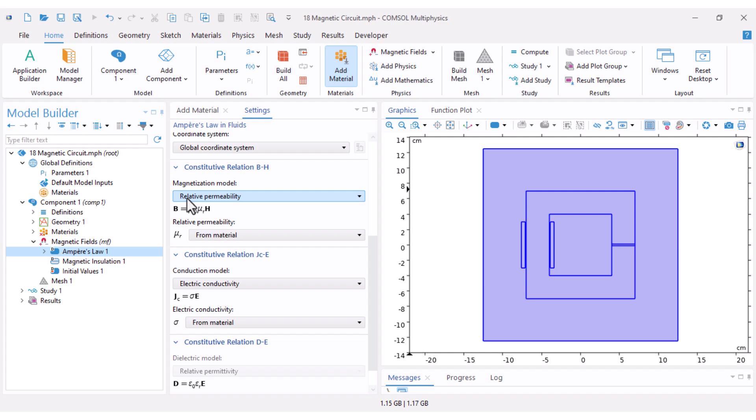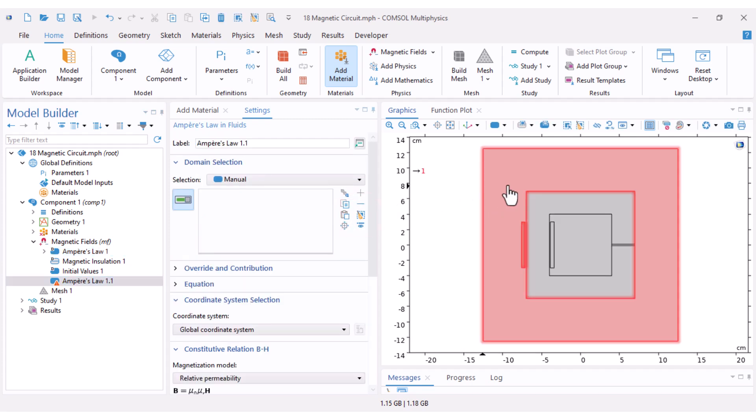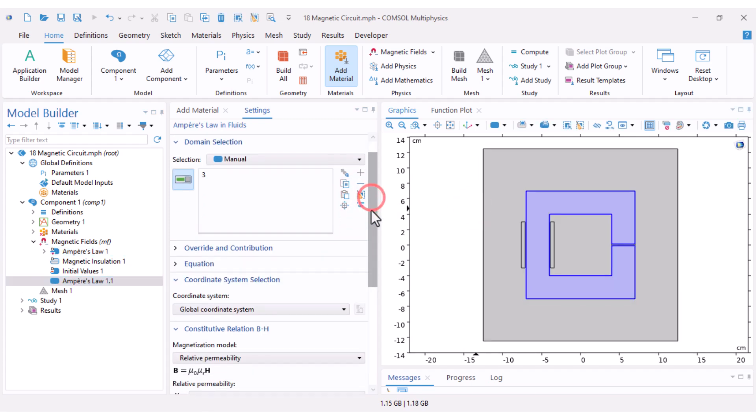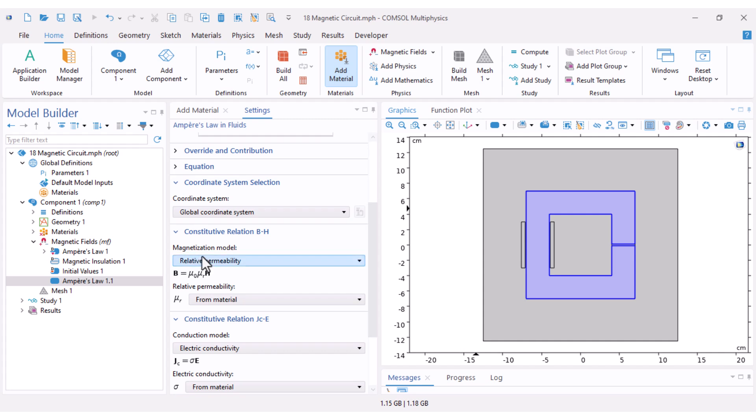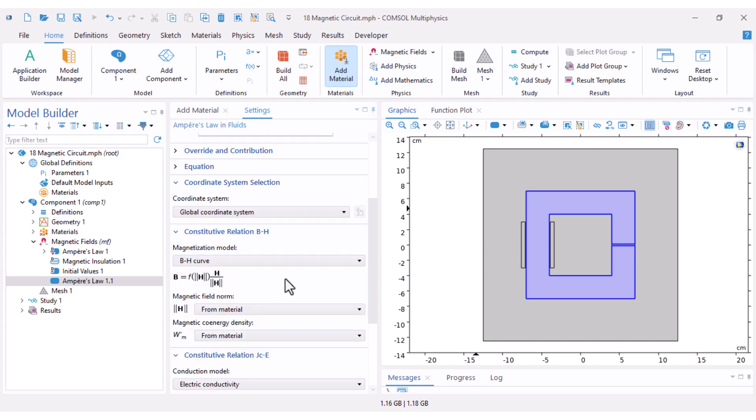COMSOL automatically adds Ampere's law with linear permeability that applies to the air region, but for the non-linear core we need another Ampere's law node. I right click and duplicate it, clear my selection, and select the core region only, and change the magnetization model to BH curve.